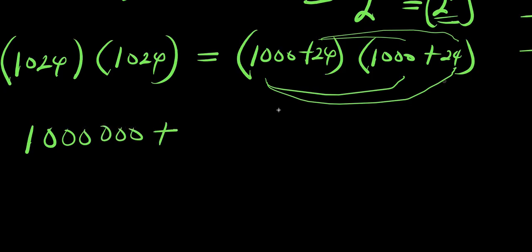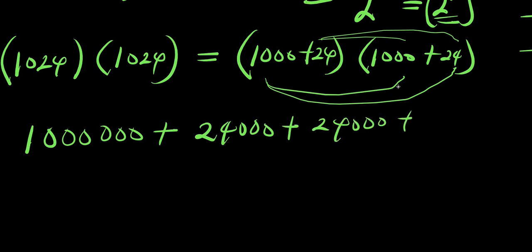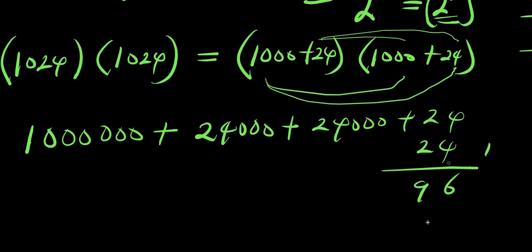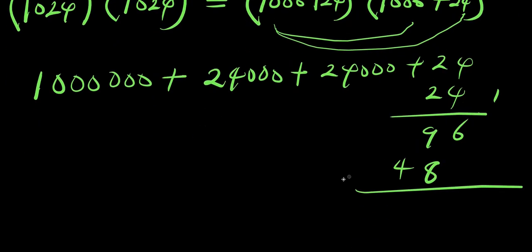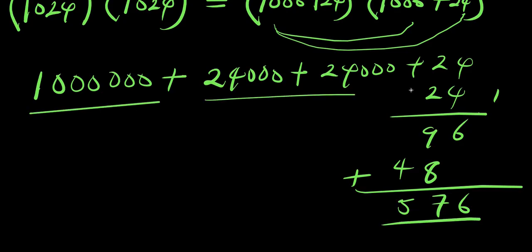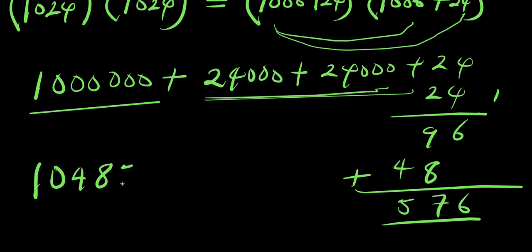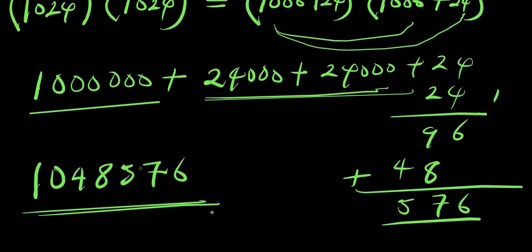Plus 24 times 1000 is another 24,000, plus 24 times 24. Computing 24 times 24: 4 times 4 is 16, carry 1; 4 times 2 is 8 plus 1 is 9; 2 times 4 is 8; 2 times 2 is 4. So 24 times 24 equals 576. Adding everything up: 1,000,000 plus 24,000 plus 24,000 plus 576 equals 1,048,576.